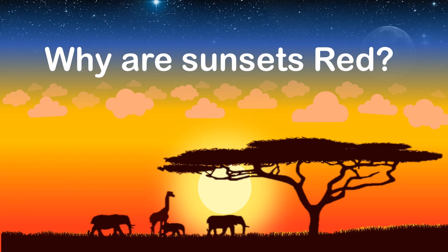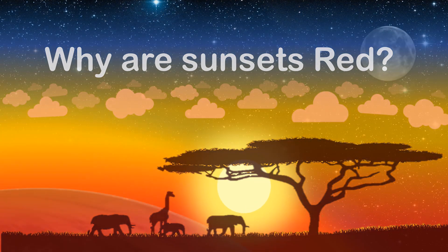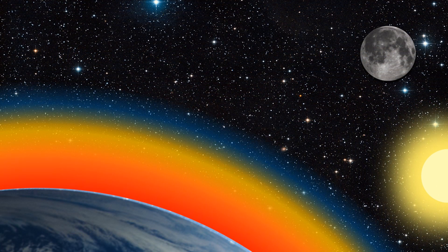But then, why do sunsets appear red? Well, it's also because blue light is scattered more than red light.